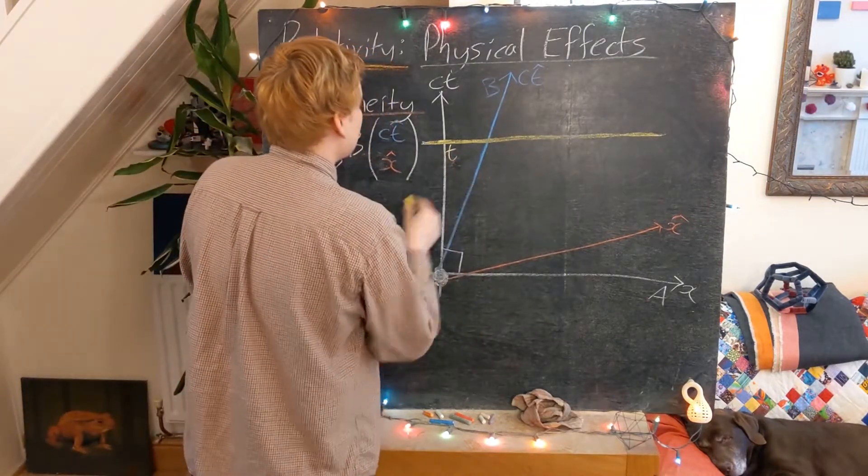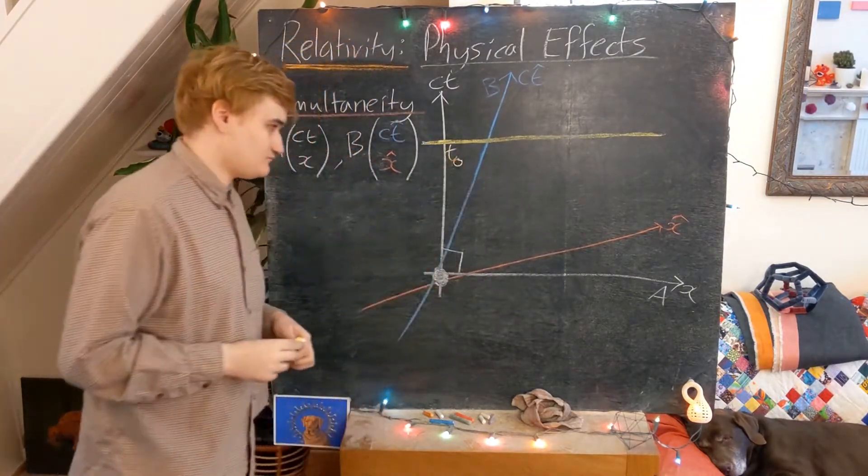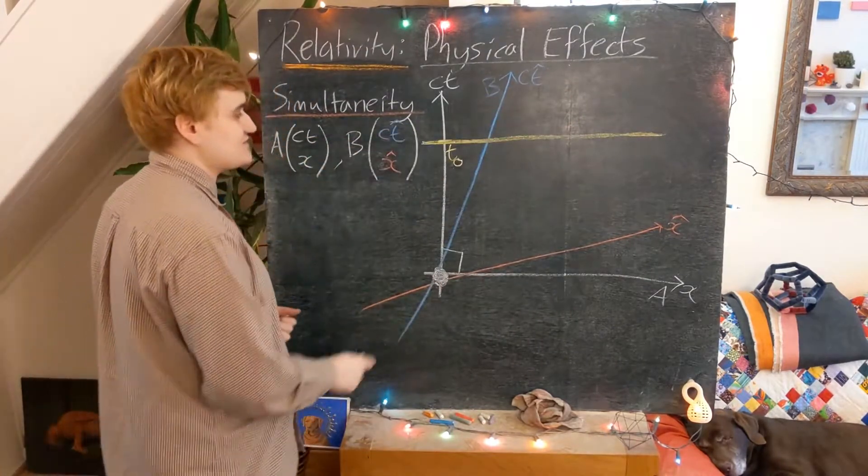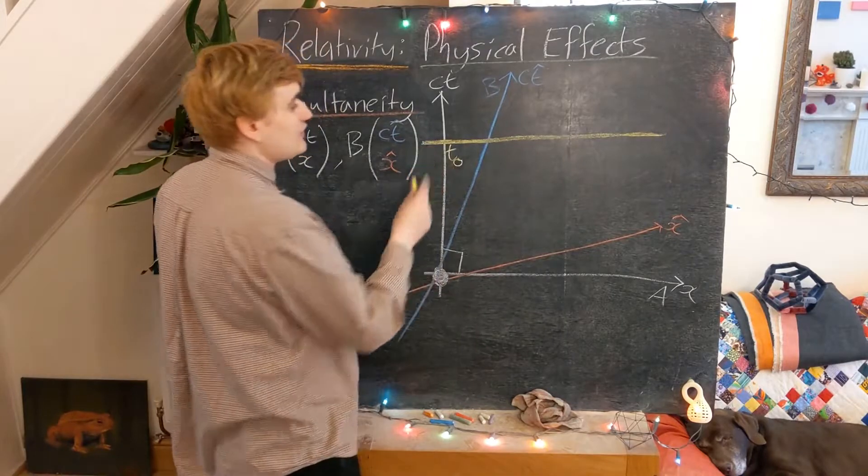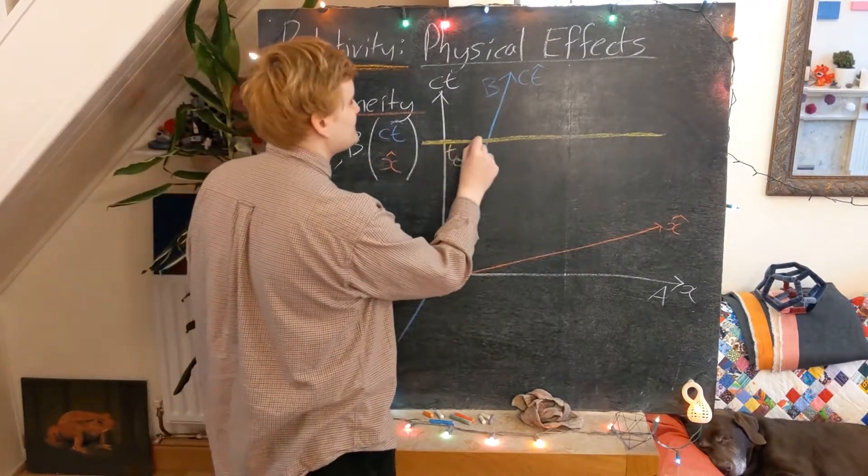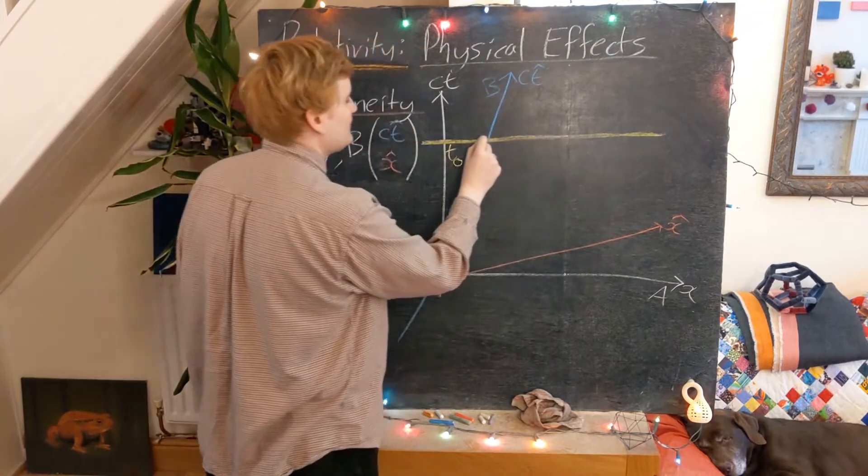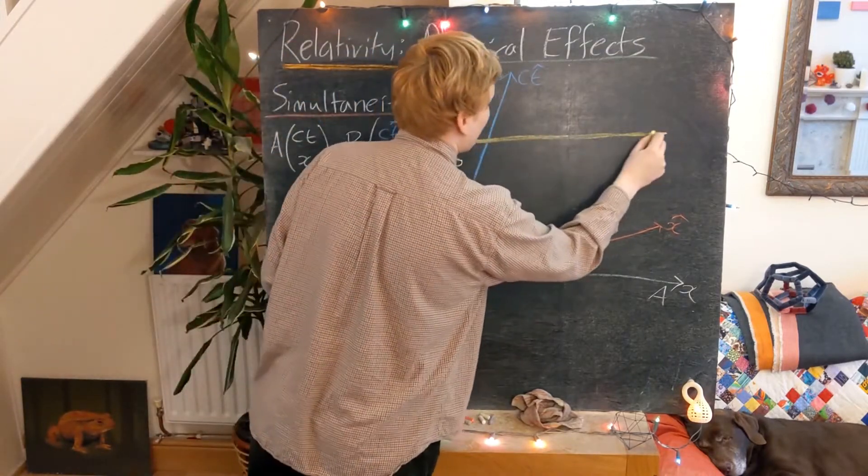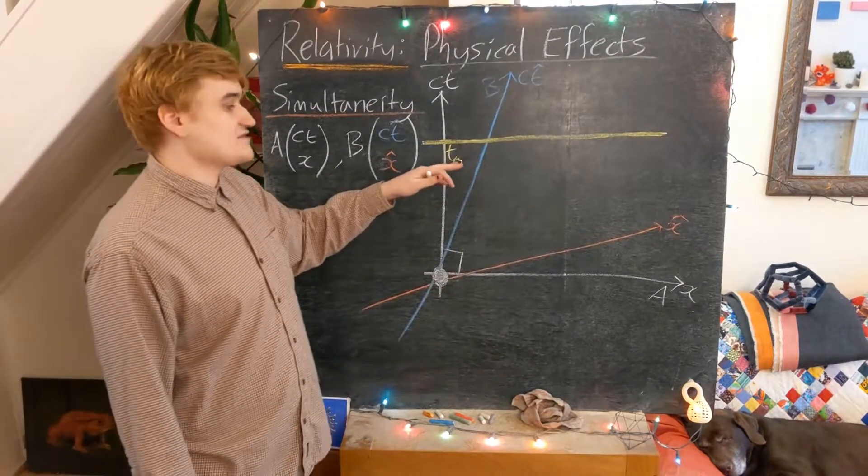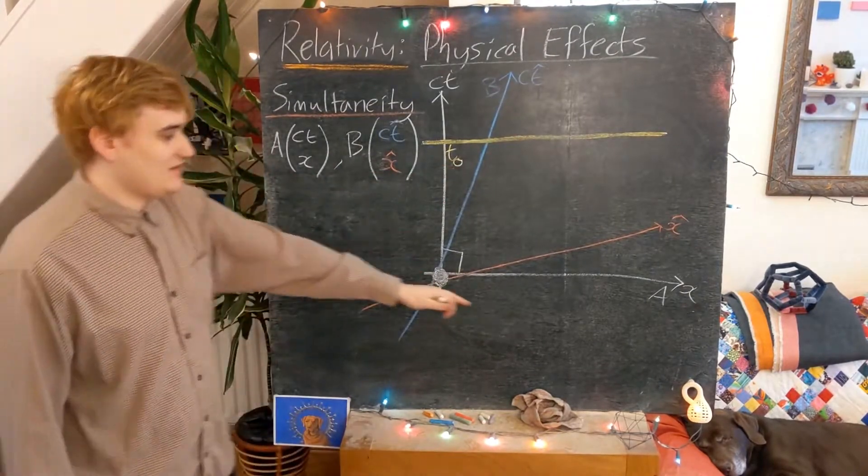So this yellow line represents all of the locations in spacetime that are all specifying an event that occurred at this time T0. So anywhere on this line, you can always know we're talking about the time T0 in the A frame.